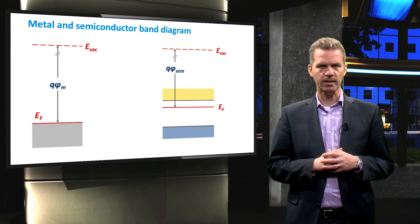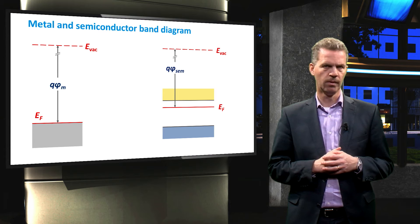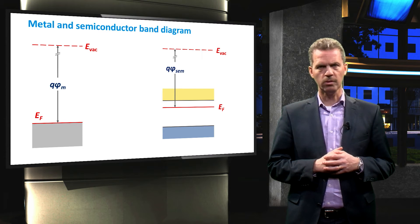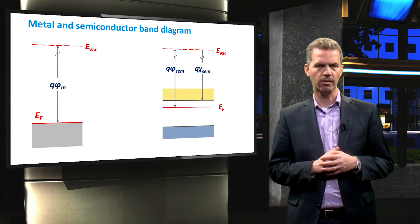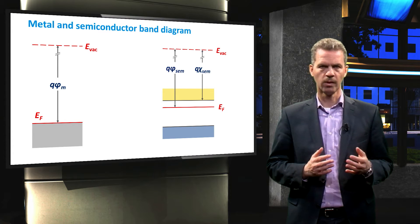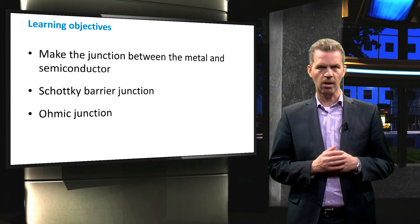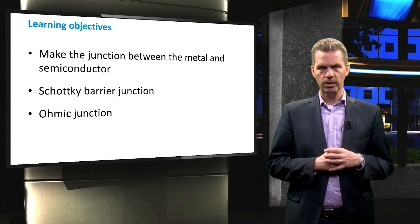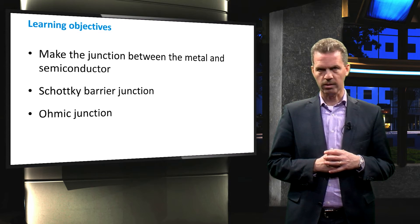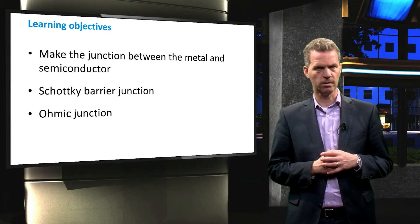This work function expresses the work required to release an electron from that material. I also introduced the electron affinity of a semiconductor, which is defined as the energy difference between the vacuum level and the bottom of the conduction band. In this video we will join the metal and semiconductor to form a metal-semiconductor junction. We will do that using an N-type semiconductor, but the physics is the same when a P-type semiconductor is used.